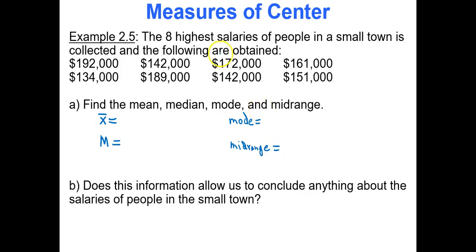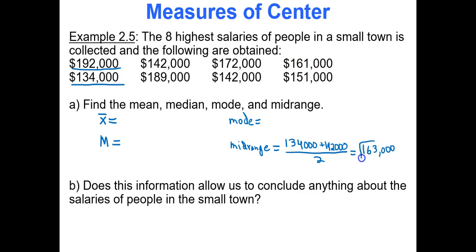For the midrange, the smallest value is 134,000 and the largest is 192,000. You add the smallest and largest data values and divide by 2, giving a midrange of 163,000. For the mode, 142,000 appears twice and nothing else appears more than once, so the mode is 142,000.